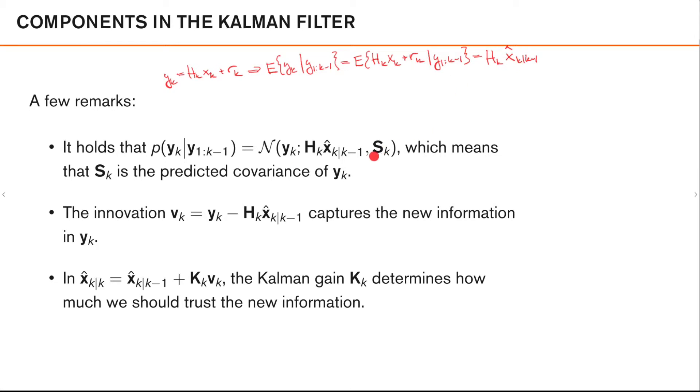And we can also show that the covariance of yk here is sk. So sk describes our uncertainty in this.